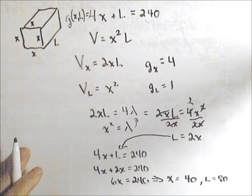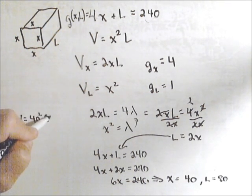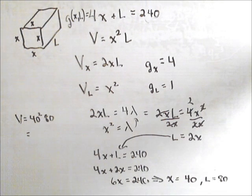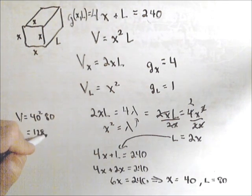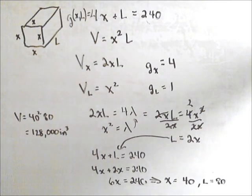And then the volume of such a box is going to be 40 squared times 80, which is equal to 128,000 cubic inches. So, again, a quick problem with Lagrange multipliers just to kind of see the technique.